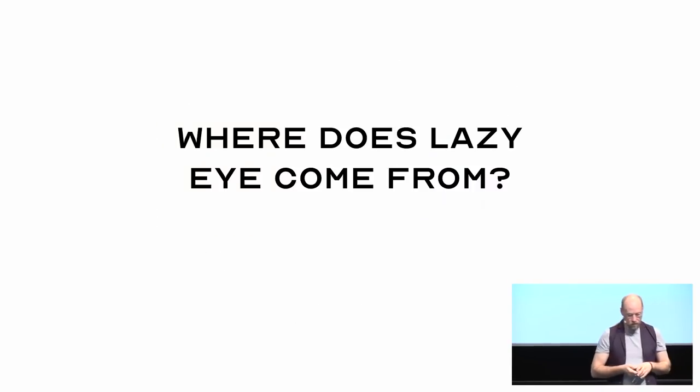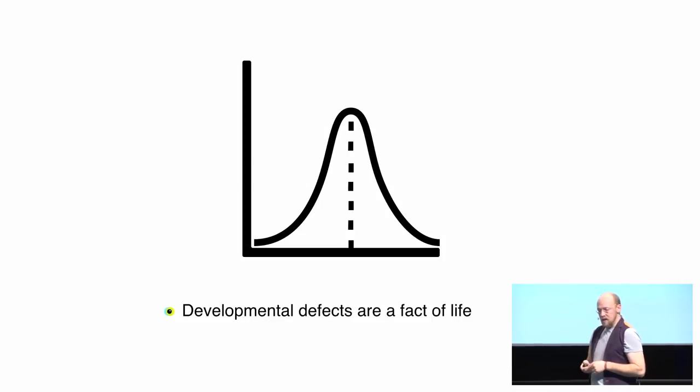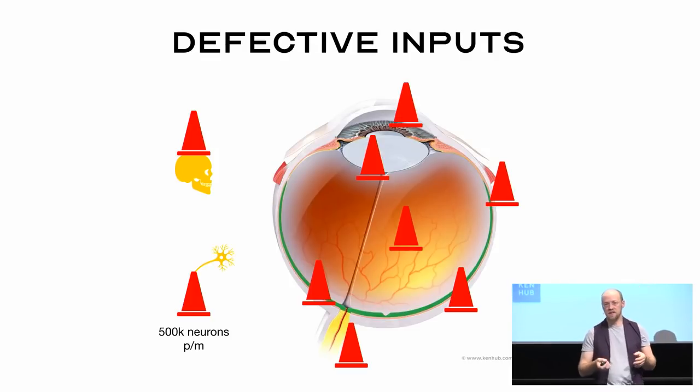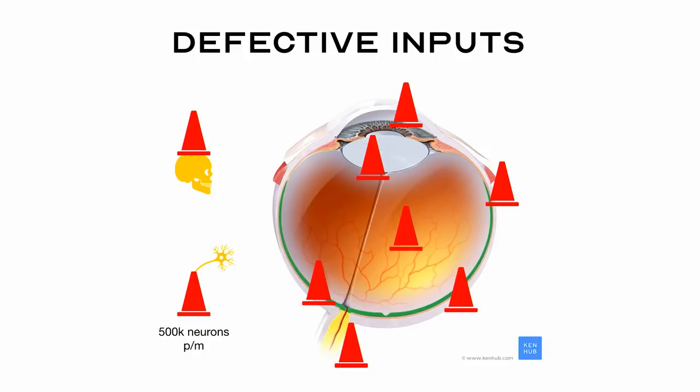So where does lazy eye come from? A lot of things can go wrong during gestation. Genes can fail to express properly. There can be toxins in the environment, there can be mutations, the mother might be malnourished, might receive an injury, et cetera. And the eye is a very sensitive organ, a lot of things can go wrong. Corneas can get damaged, lenses can be misshaped, there can be too much fluid in the eye, too little fluid in the eye, the eyeball can be misshaped, the optical nerve can be damaged, the skull might be the wrong shape, so the eye is too high, too low, to the side.